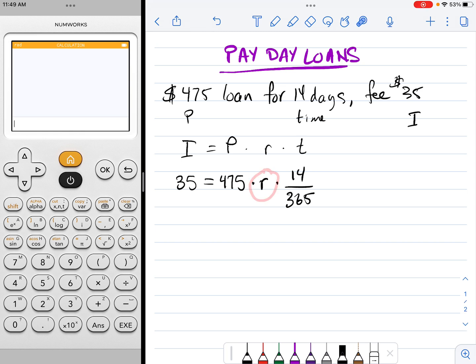I have everything that I need to solve for this interest rate r. What I'll need to do first is multiply each side by 365, so take 365 and multiply up to the 35, and then I'll need to divide both by the 475 and the 14. So what that will look like is 35 times the 365 divided by 475 times the 14, that should equal my interest rate.